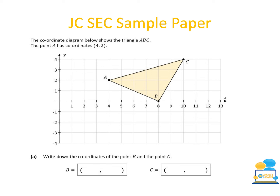The final exam question is from the SEC sample paper, on coordinate geometry of a triangle ABC where point A is (4, 2). Just like the previous exam questions, part A asks us to find the coordinates of B and C from the diagram. Point B lies on the x-axis, so y must equal zero — it is at 8 on the x-axis, giving B as (8, 0). Point C is at 10 on the x-axis and 4 on the y-axis, giving C as (10, 4).